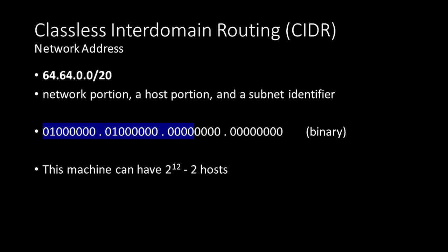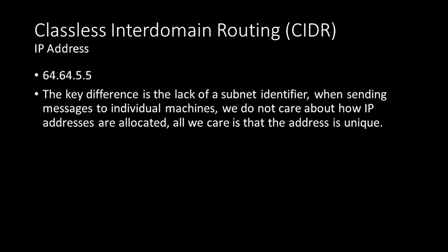This network can have up to 2 to the 12 minus 2 hosts. There are two reserved addresses for each network: the host address of all zeros is reserved to identify the network itself, and the host address with all ones is reserved as a broadcast address. There is also an IP address for individual hosts — the key difference being the lack of a subnet identifier. When sending messages to individual machines, we only care that each address is unique. So IP addresses identify individual machines, while CIDR addresses represent ranges of IP addresses and are used to identify entire networks.